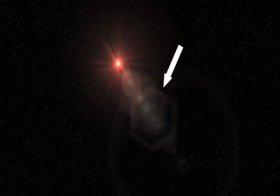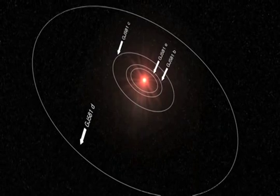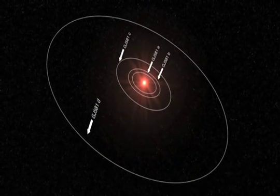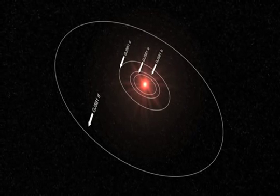With Gliese 581e, the planetary system has four known planets, with masses of about 1.9, 16 (planet B), 5 (planet C), and 7 Earth masses (planet D).